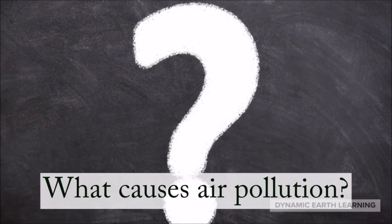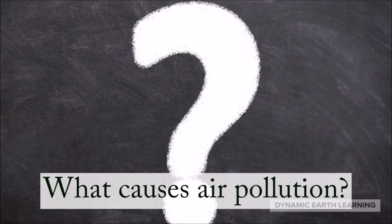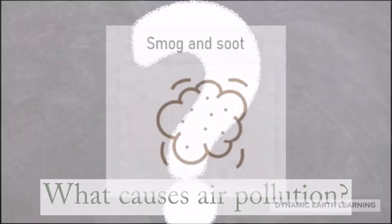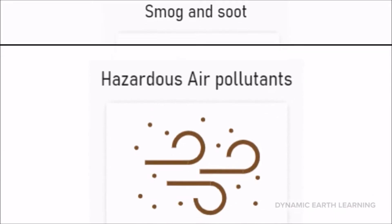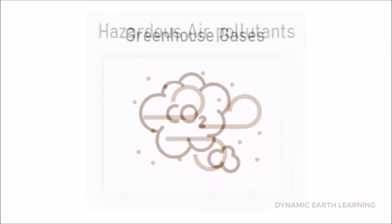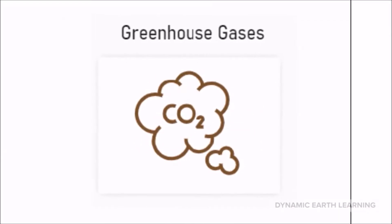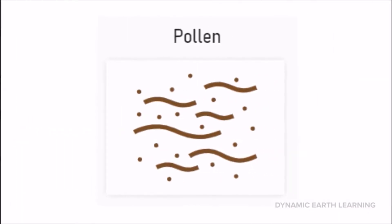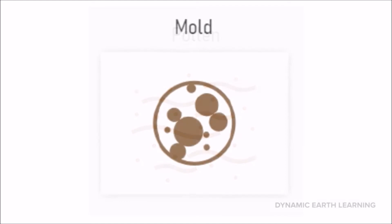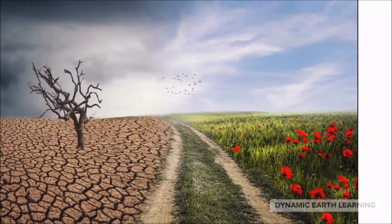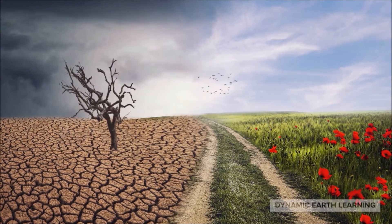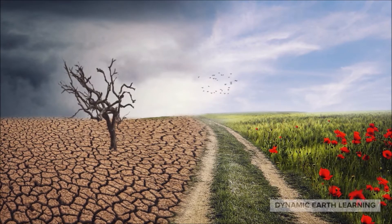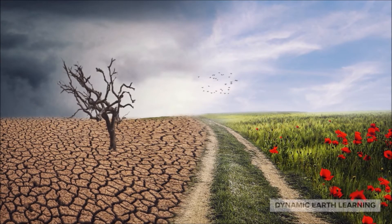What causes air pollution? There are five air pollutant sources: smog and soot, hazardous air pollutants, greenhouse gases, pollen, and mold. The emissions of these pollutants into the air can result in changes to the climate, and increasing air pollution will make climate change worse.